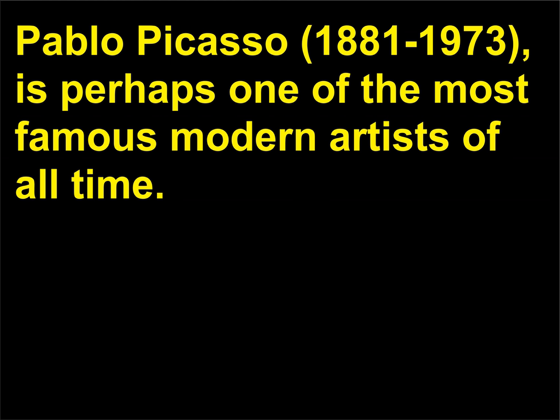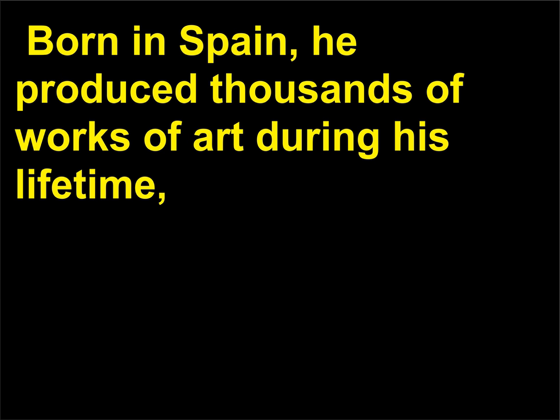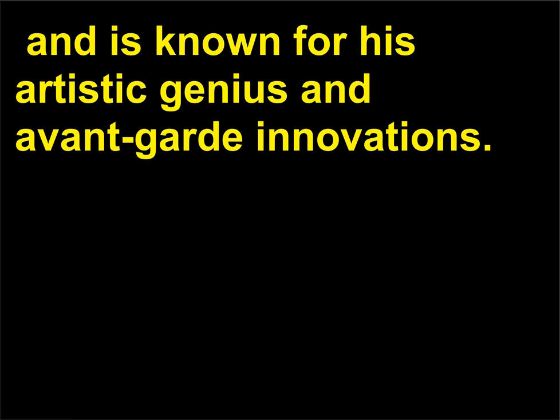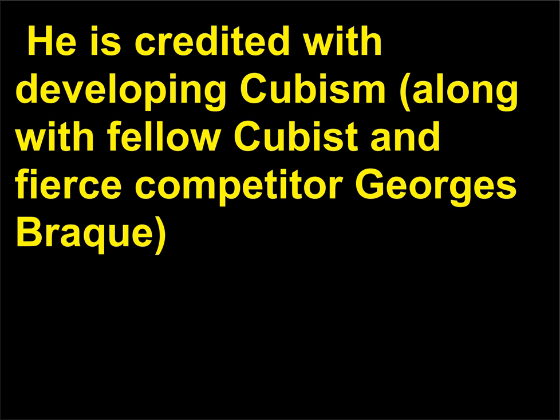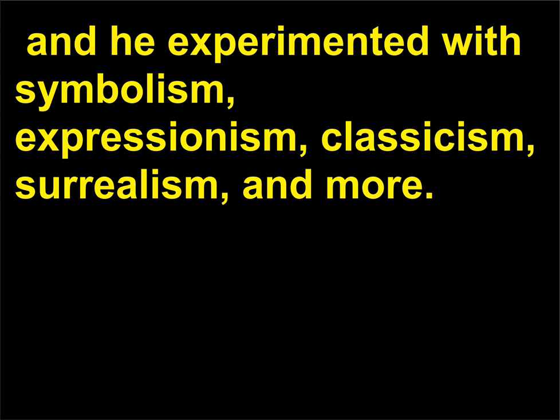Who was Pablo Picasso? Pablo Picasso (1881–1973) is perhaps one of the most famous modern artists of all time. Born in Spain, he produced thousands of works of art during his lifetime and is known for his artistic genius and avant-garde innovations. Picasso was a painter and sculptor who experimented with collage, mixed media, and sculptural assemblages. He is credited with developing Cubism along with fellow Cubist and fierce competitor Georges Braque. He helped popularize non-Western art and experimented with symbolism, expressionism, classicism, surrealism, and more.